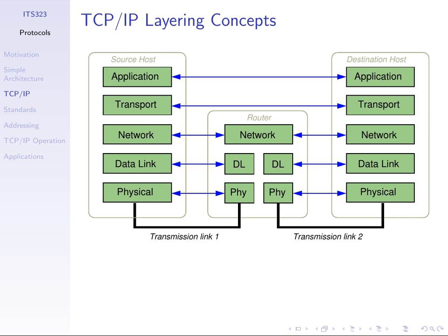An important thing to note is that not all devices need to implement all layers. Normally the end hosts — PCs and laptops — implement all five layers because they run applications and need the support of the application and transport layers. Intermediate devices, depending on where they are in the network, may not implement all five layers. In this example, the router implements physical, data link, and network layers. It doesn't care about what application is being used between the hosts.